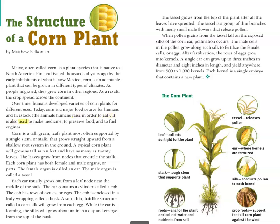It is also used to make medicine, to preserve food, and to fuel engines. Corn is a tall, green, leafy plant most often supported by a single stem, or stalk, that grows straight upward from a shallow root system in the ground. A typical corn plant will grow as tall as ten feet and have as many as twenty leaves.